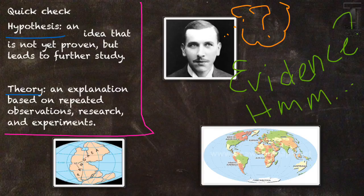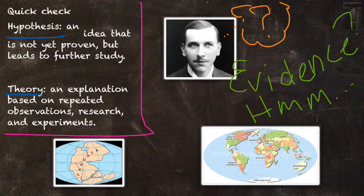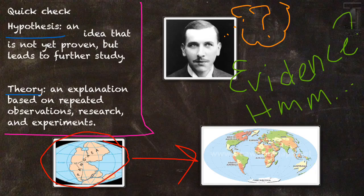Wegener is really excited about the fact that he thinks he's on to something. He comes up with a hypothesis — a hypothesis is just an idea that's not yet proven but leads you to want to study more. So he studies a lot more and comes up with his theory. A theory is just an explanation based on repeated observations, research, and experiments. He needs evidence so he can figure out how we went from Pangaea to what we're looking at now.